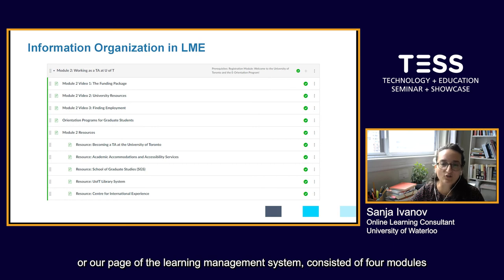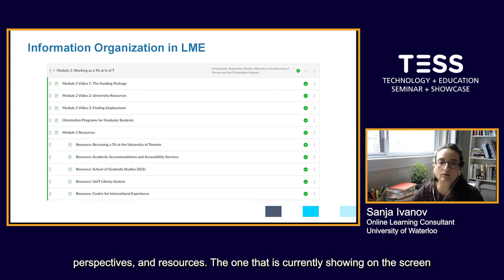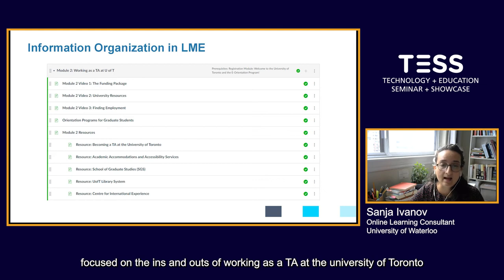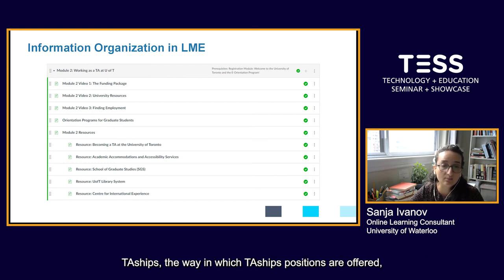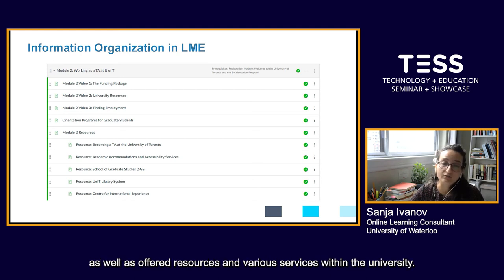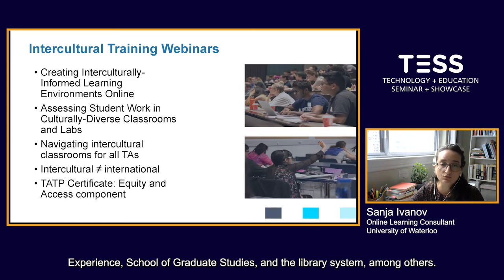Our learning management system page consisted of four modules with the goal to ease navigation and emphasize specific topics, perspectives, and resources. The module currently shown on screen focused on the ins and outs of working as a TA at the University of Toronto — covering funding packages and their relationship with TAships, the ways in which TA positions are offered, as well as resources on various university services such as Accessibility and Accommodation, the Center for International Experience, the School of Graduate Studies, and the library system.